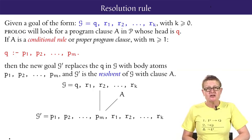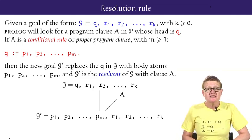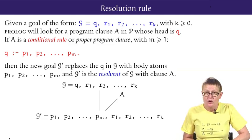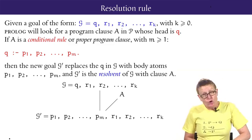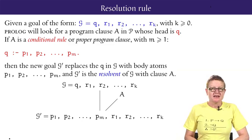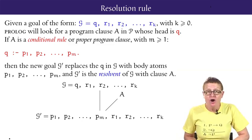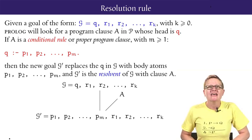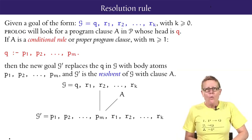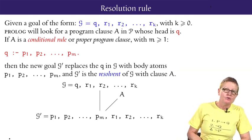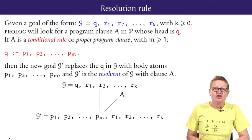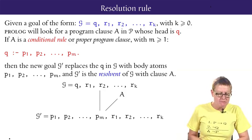Under the refutation interpretation we are supposing that G is false and all the clauses in P are true. If it is atom Q in G that is false then under the principle of Modus Tollens or denying the consequent, as in my t-shirt, we can infer that one of P1 or P2 or any of them up to PM must also be false. So we get the new goal G prime as described.